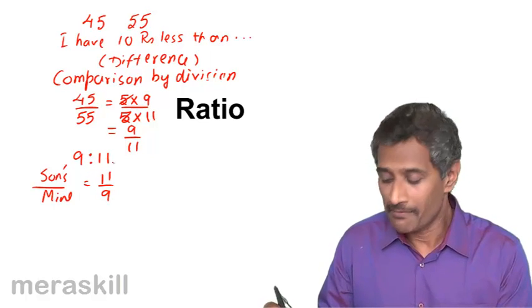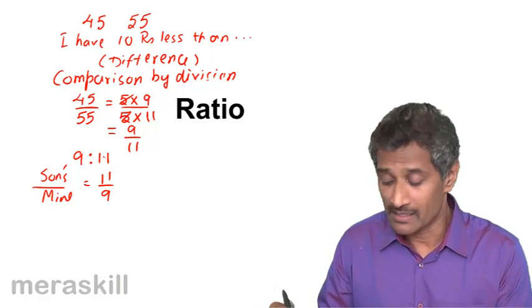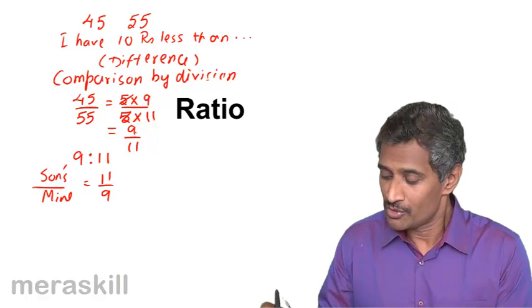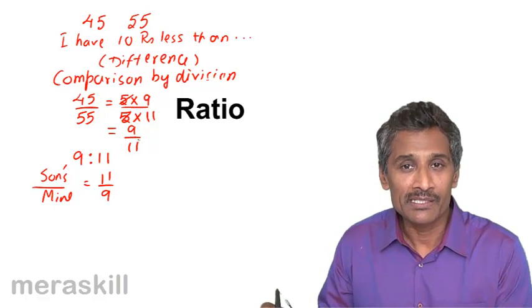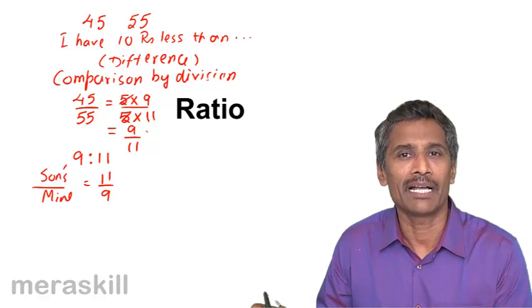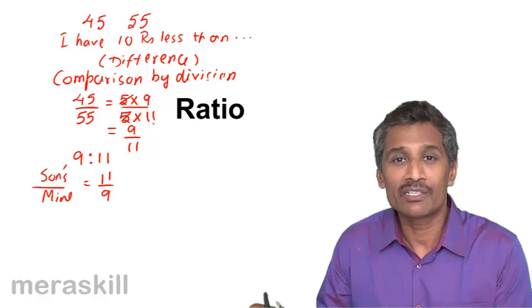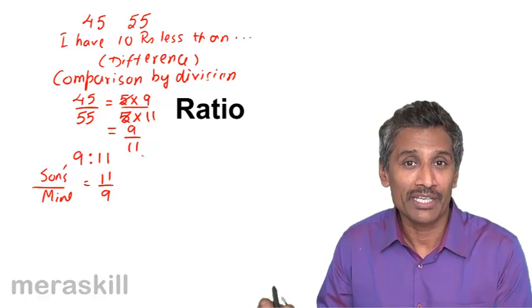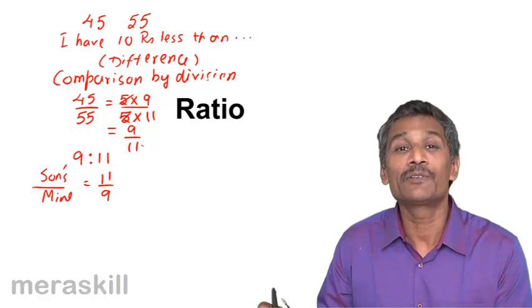There is yet another interesting fact. If you're writing it as 9 is to 11 or 9 by 11, for all practical purposes this looks like a fraction. In fact, for most of the mathematical operations, whatever rules are associated with fractions, the same rules are valid here. But there is a slight difference in the meaning.